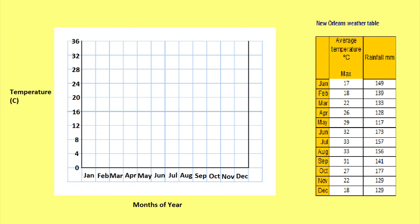On the left hand Y axis we will plot the temperature in degrees Celsius. Since 33 degrees is the highest temperature in the table, we will number the Y axis from 0 to 36. On the right hand Y axis we will label the rainfall in millimetres from 0 to 180.